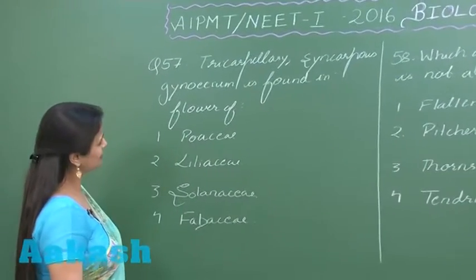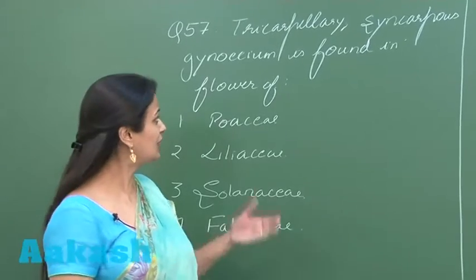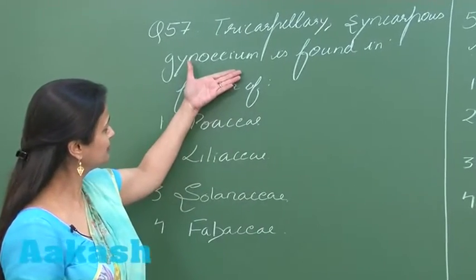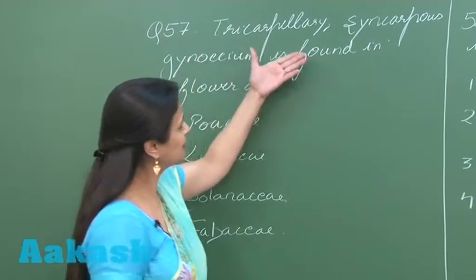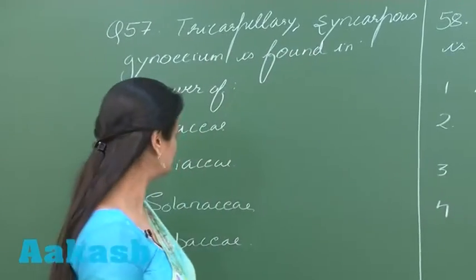So let's see question number 57. In question number 57, we have to look for the gynoecium where tricarpellary syncarpous condition is there.